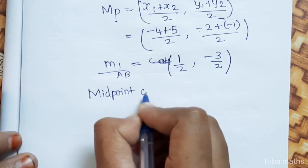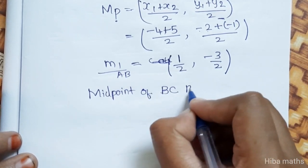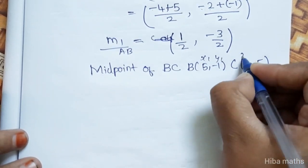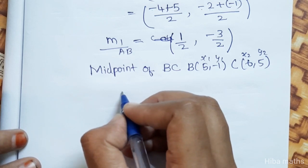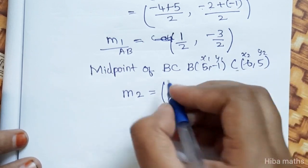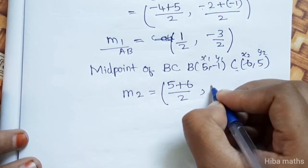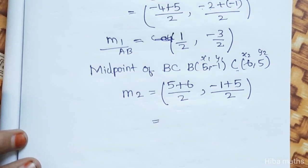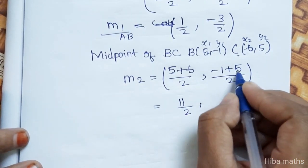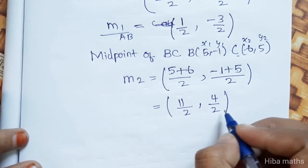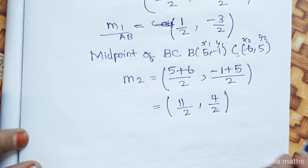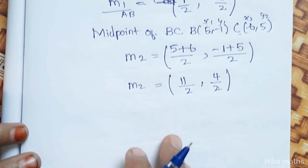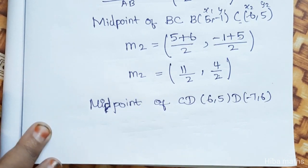Midpoint of BC is M2. B value is 5, minus 1 and C is 6, 5. Using the midpoint formula: x1 plus x2 is 5 plus 6 divided by 2, and y1 plus y2 is minus 1 plus 5 divided by 2. That gives 11 by 2 and 4 by 2. So M2 is (11/2, 4/2).